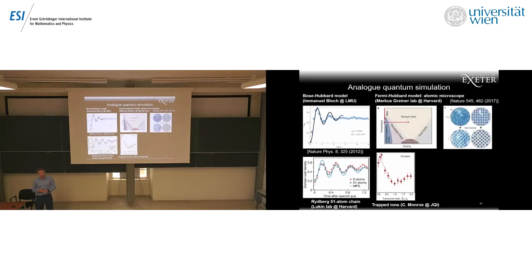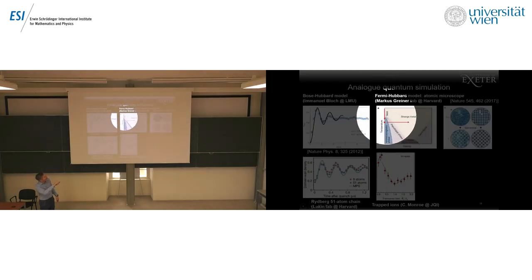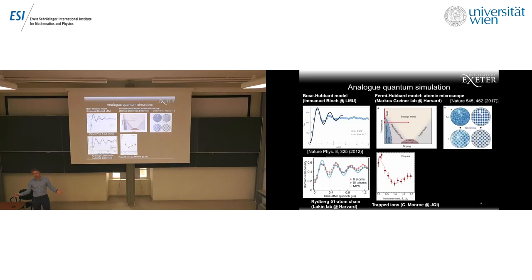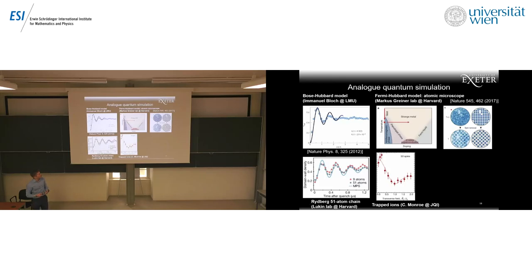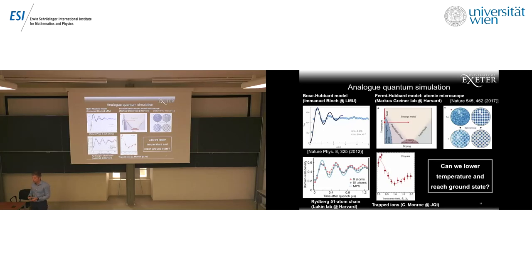A very inspiring example is the Fermi-Hubbard model simulator. Marcus Greiner showed that in 2D Fermi-Hubbard — which is extremely difficult to calculate classically — they managed to lower the temperature just enough to measure the antiferromagnetic phase. Below that lies the pseudo-gap phase and the coveted d-wave superconductor. For all these phases we need to lower the temperature and potentially reach the ground state, but adiabatic quantum computing doesn't work straightforwardly for this complex Fermi-Hubbard case.